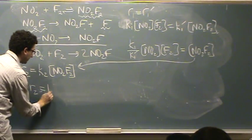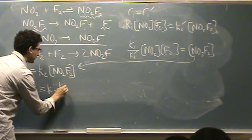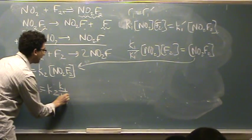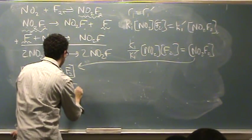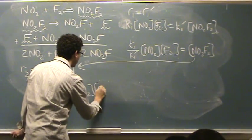Rate two equals K2 times K1 over K1 prime times NO2 times F2.